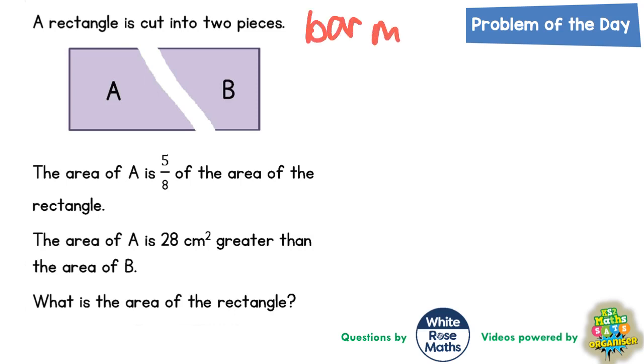So we're going to try that here and see how far we get. So it says a rectangle is cut into two pieces A and B. The area of A is five-eighths of the area of the rectangle. So what we're saying here is that A is worth five-eighths so to get it up to a whole one, B must be worth three-eighths.